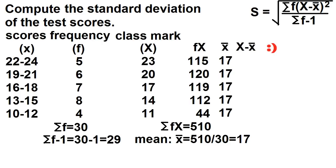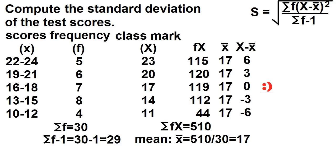23 minus 17 is 6. 20 minus 17 is 3. 17 minus 17 is 0. 14 minus 17 is negative 3. 11 minus 17 is negative 6.